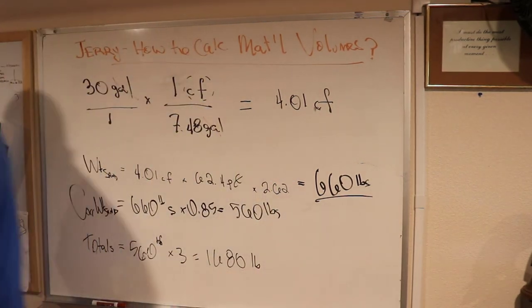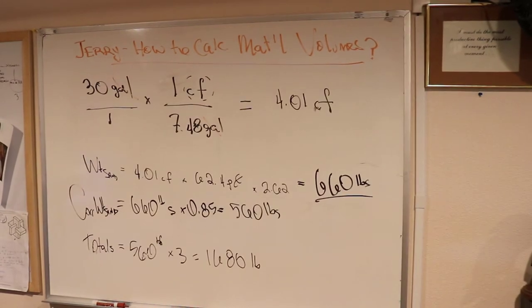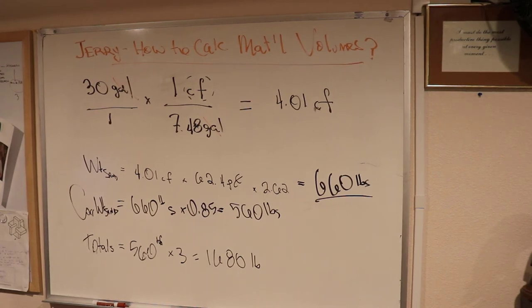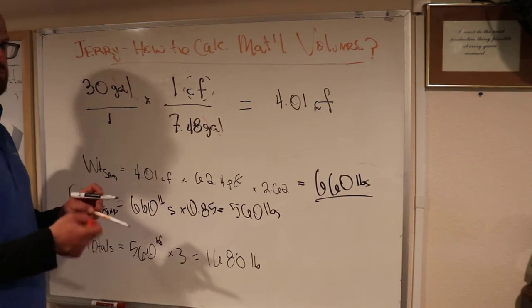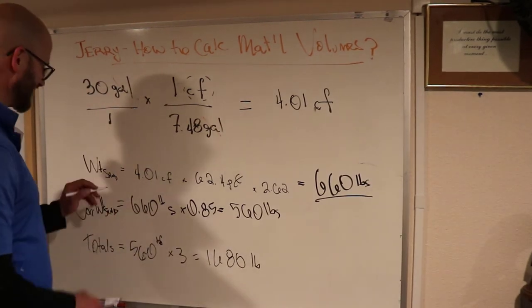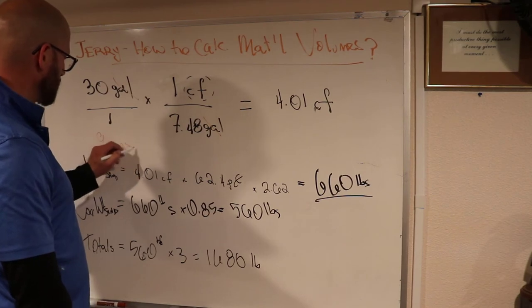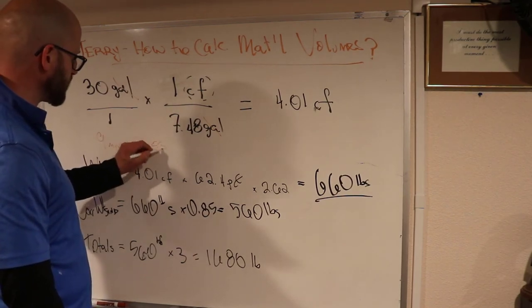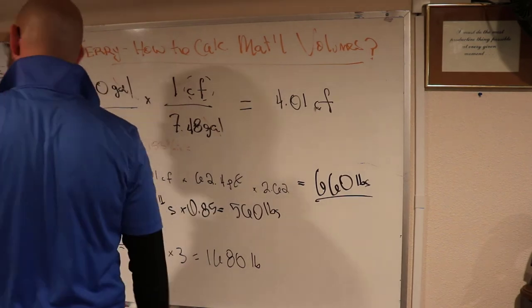Now we know that for every mix that we need to do, we need 153.6 pounds. We need to do 9 mixes. So 9 mixes at 153 pounds per mix means we need 1377 pounds.